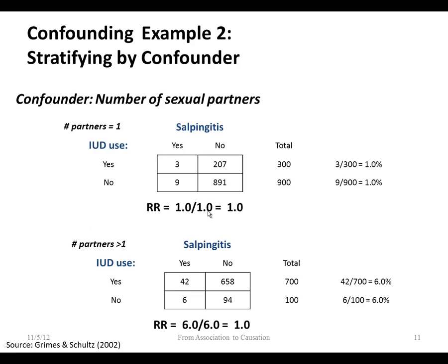In the one-partner group, IUD use yes or no, salpingitis yes or no — interestingly, the risk ratio is 1. There is no relationship within people who have just one partner between IUD use and salpingitis. Similarly, for the group with more than one partner, the relative risk is also 1. Getting the same relative risk across strata tells us that number of partners was confounding the observed relationship between IUD use and salpingitis.